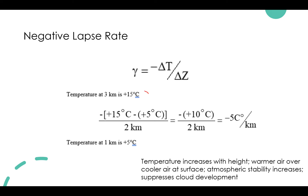For a negative lapse rate example, we use temperatures of +15°C at three kilometers and +5°C at one kilometer. Gamma equals minus (15°C minus 5°C) over (3 minus 1 km) — that's minus 10°C over 2 km, giving negative 5°C per kilometer. This is a negative lapse rate where temperature increases with height — warmer air over cooler air at the surface. Atmospheric stability generally increases, suppressing vertical cloud development.